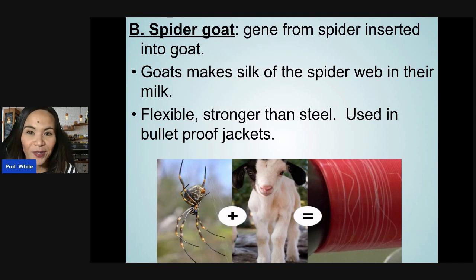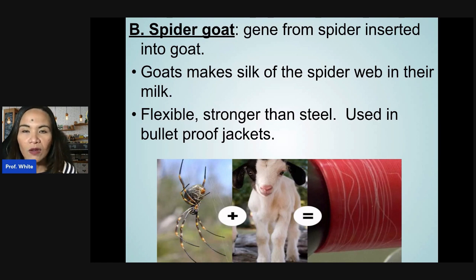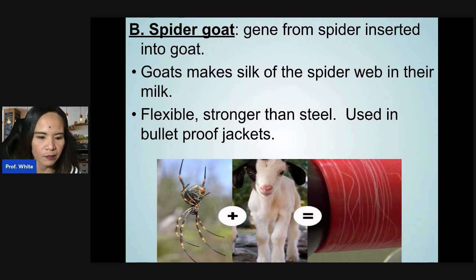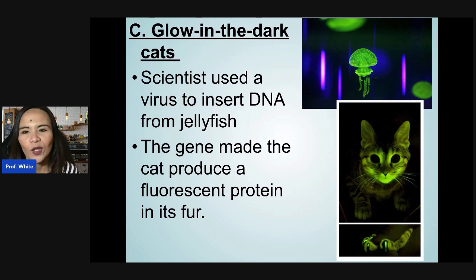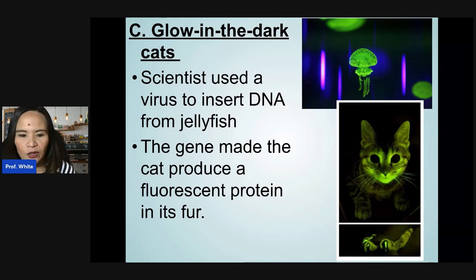Another example is the spider goat — genes from a spider are inserted into the goat, so the goat produces spider silk proteins in its milk. This makes the wool flexible and stronger than steel, which is used in bulletproof jackets. There are also glow-in-the-dark cats, created by using a virus to insert DNA from jellyfish, causing the cat to produce a fluorescent protein in its fur.